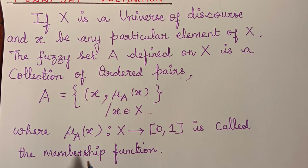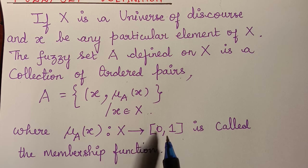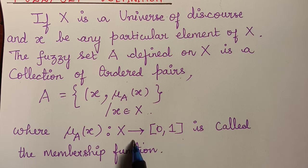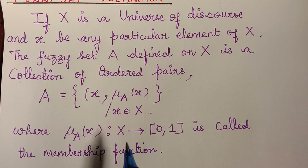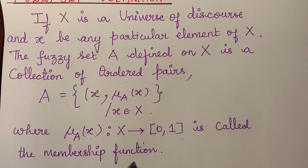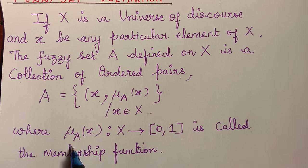This is known as the membership function. For a crisp set there are only two possibilities: the value can either be 1 or 0. But for a fuzzy set the membership value is between 0 and 1. In a crisp set the function is known as the characteristic function, whereas here it is known as the membership function, as it represents the degree of membership of element x with set A.